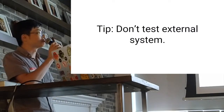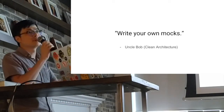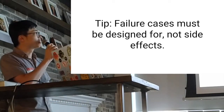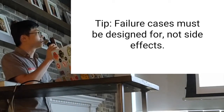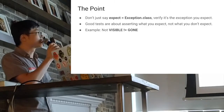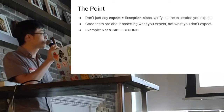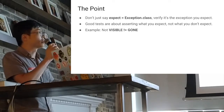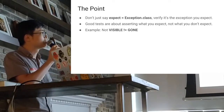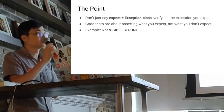Don't test the external system — it's not related. I also want to mention Uncle Bob's clean architecture: write your own mocks. The last case I'll talk about is failure cases — they must be designed for, not side effects. Don't just say expect equals to Exception.class; verify the specific exception you expect. Tests are about asserting what you expect, not what you don't expect. For example, if you want to verify your view is visible, don't assert visible not equal to GONE.